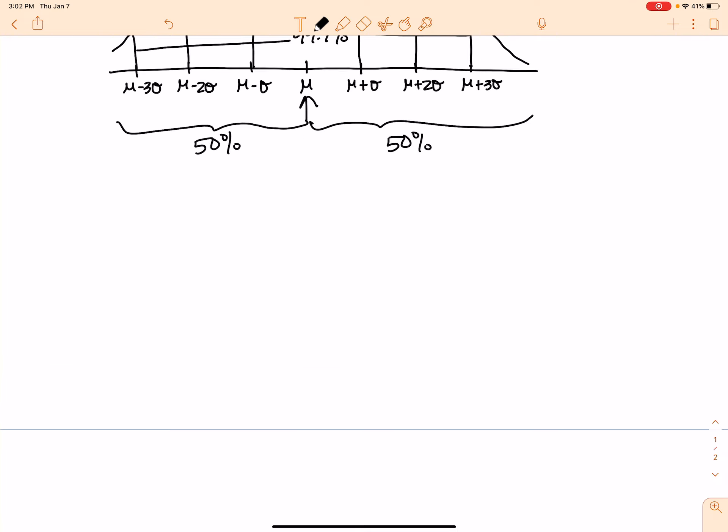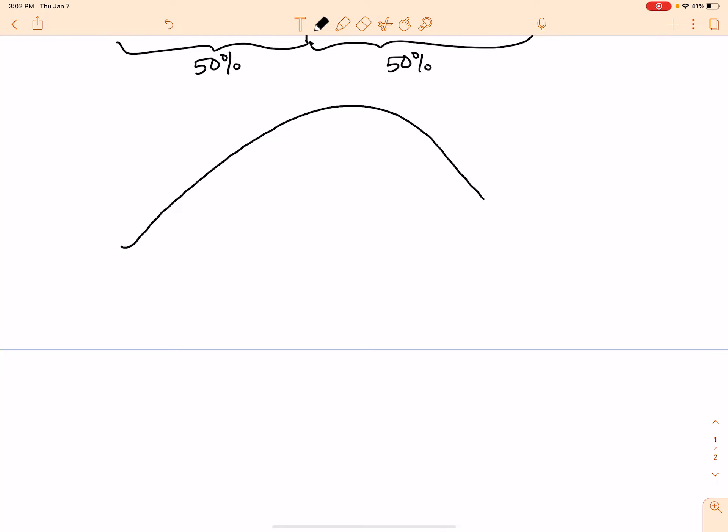So I'm going to draw another graph here. So here's my graph again. And again, I'm going to have the mean, the mean plus one standard deviation, the mean plus two standard deviations, plus three standard deviations. And then on the left, the same thing mu minus one standard deviation, mu minus two standard deviations, mu minus three standard deviations.